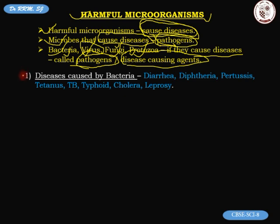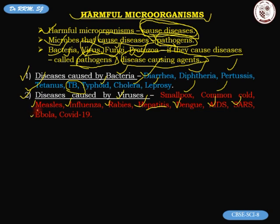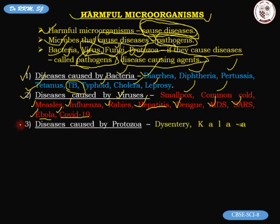Let us look at some examples. Diseases caused by bacteria include diarrhea, diphtheria, pertussis, tetanus, TB (tuberculosis), typhoid, cholera, and leprosy. Diseases caused by viruses include smallpox, common cold, measles, influenza, rabies, hepatitis A, B, and C, dengue, AIDS, SARS, Ebola, and COVID-19.